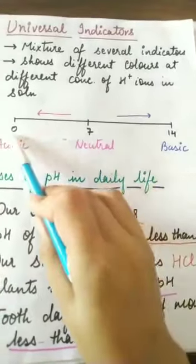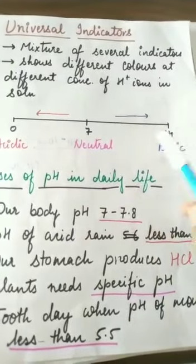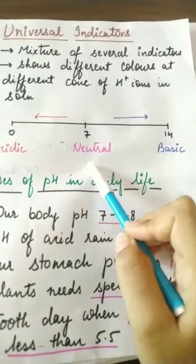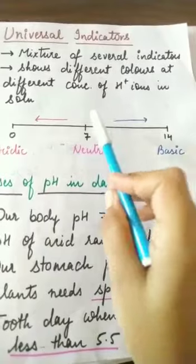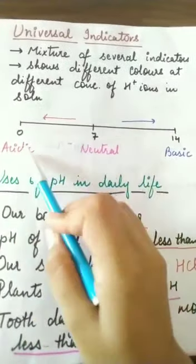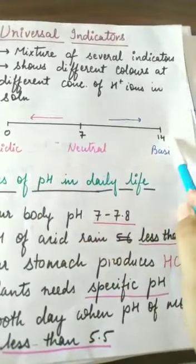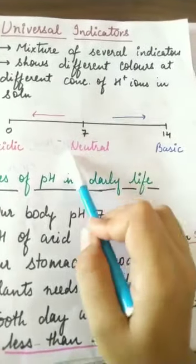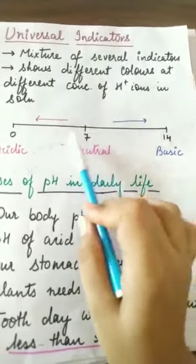It is a scale which has 14 divisions and 7th we consider as neutral. From 0 to 7 is acidic and from 7 to 14 is basic, and at 7 it is neutral. It is also called the pH scale.